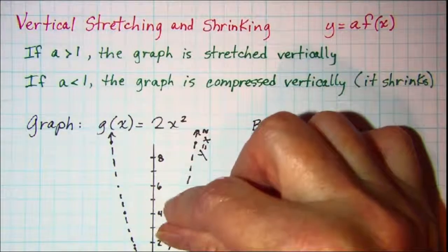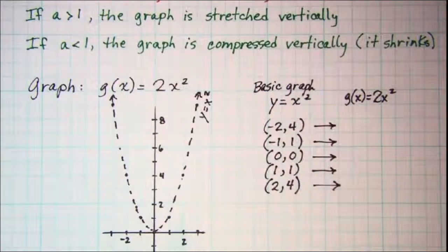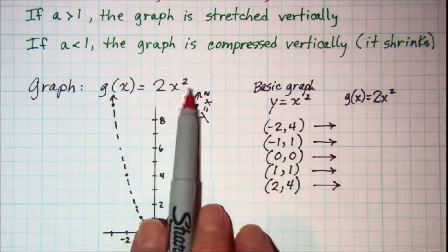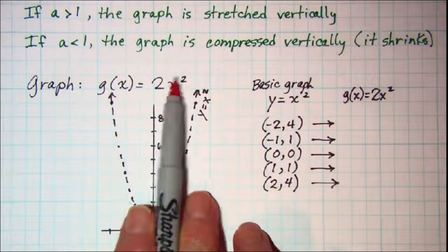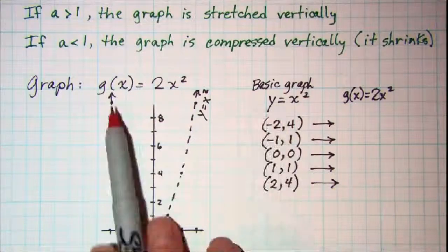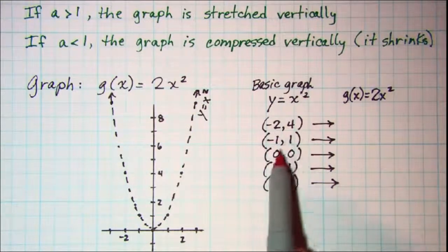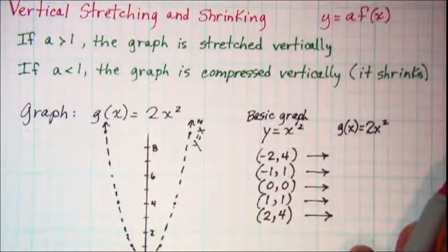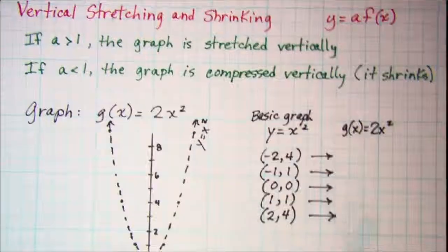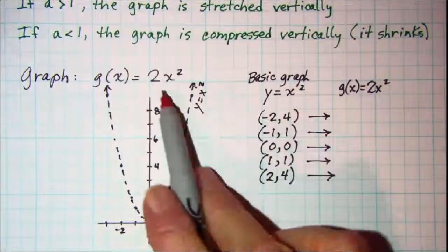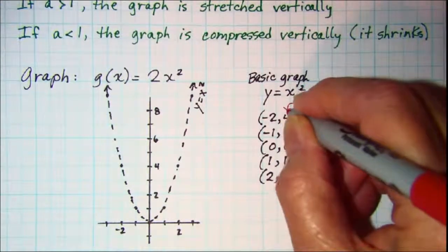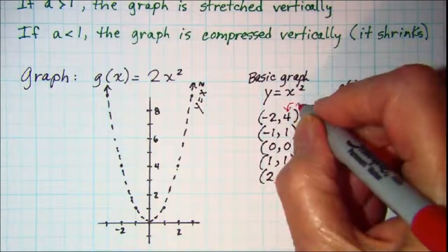The first example that we'll be looking at is to graph g of x equals 2x squared. Now we know that our basic graph is the function y equals x squared. I've shown that graph here, and I've shown those points over here. Now we said that we'll be multiplying y by the coefficient a, so we'll multiply y by 2 in this case, taking our y value on each of our basic graph points and multiplying by 2.